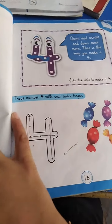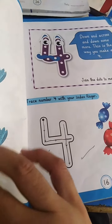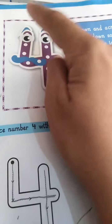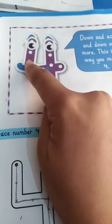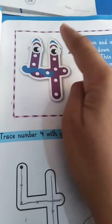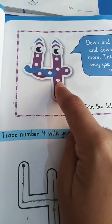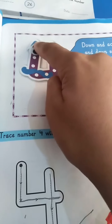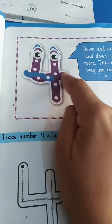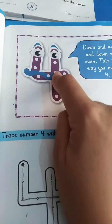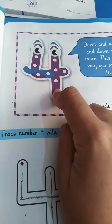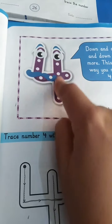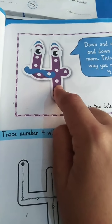Let's start to trace this 4. Raise your index finger and put it at this point — down and cross and down some more. I repeat: raise your index finger and put it on this point, down and cross and down some more. Let's make a number 4. It's so easy to trace.